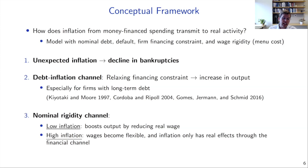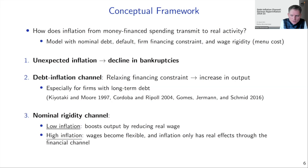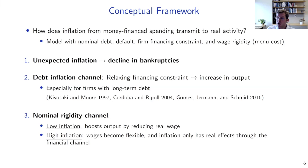Is this a radical switch or a smooth transition — a threshold? In our framework with menu costs, when inflation is relatively low, your actual real wage stays close to the optimal real wage. Once inflation becomes very high, the actual real wage diverges far from the optimal and you decide to switch. So there is a threshold switching effect, though it depends on the specification of the wage-setting process.